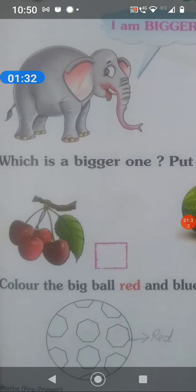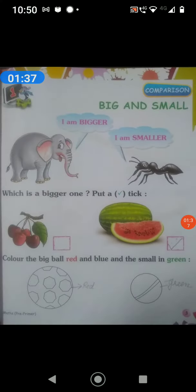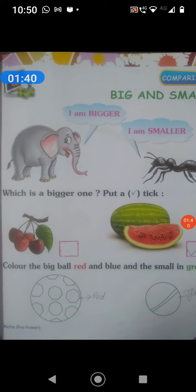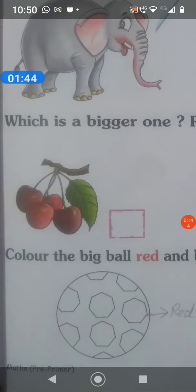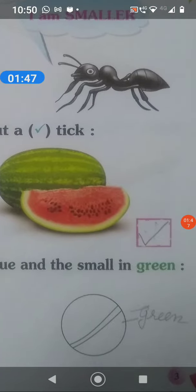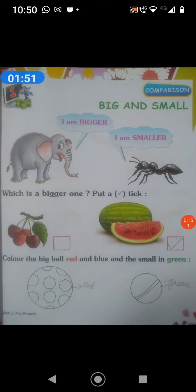In the next question, color the big ball red and the small ball green. It says that the big ball is red and the small is green. This is the big ball, right? And this is the small ball. We color the small ball green and the big ball red. And do them in your book.